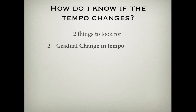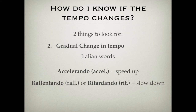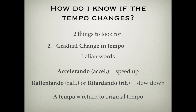The second thing to look for is if there's a gradual change in tempo, because the composer may want to gradually change the speed. In that case, there are a few more Italian words to look out for. If they want to speed up, you've got accelerando, often abbreviated. If they want to slow it down, you've got rallentando or ritardando, also often abbreviated. Once it's sped up or slowed down, if the composer wants you to return to the original tempo, they'll write a tempo, meaning go back to the original tempo.